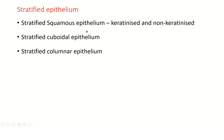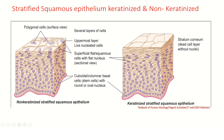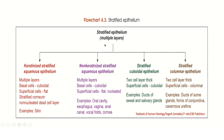Stratified epithelium is divided into: stratified squamous epithelium — again divided into keratinized and non-keratinized; stratified cuboidal epithelium; and stratified columnar epithelium. Here you can see non-keratinized stratified squamous epithelium, where the keratin layer is minimal or absent. And here you can see keratinized stratified squamous epithelium, where the keratin layer is abundant.